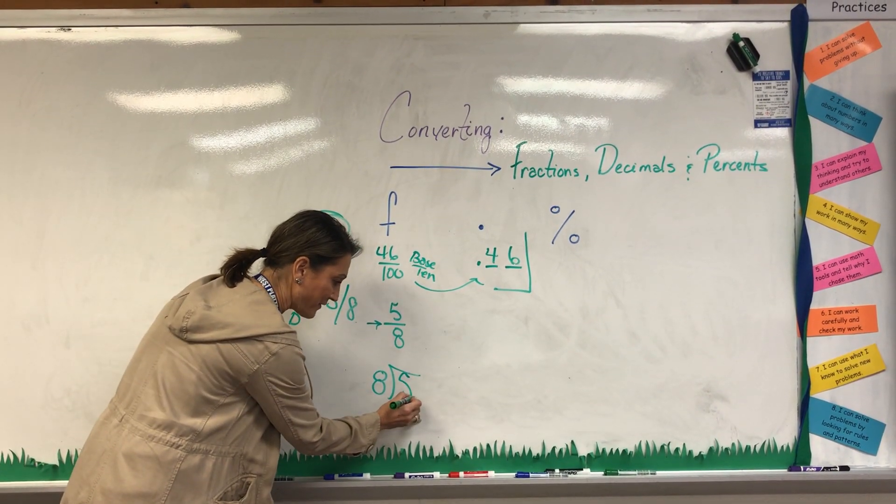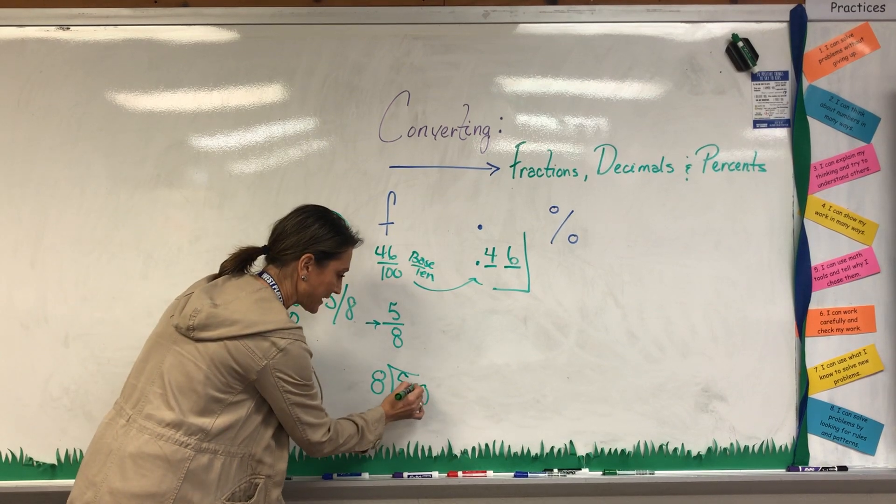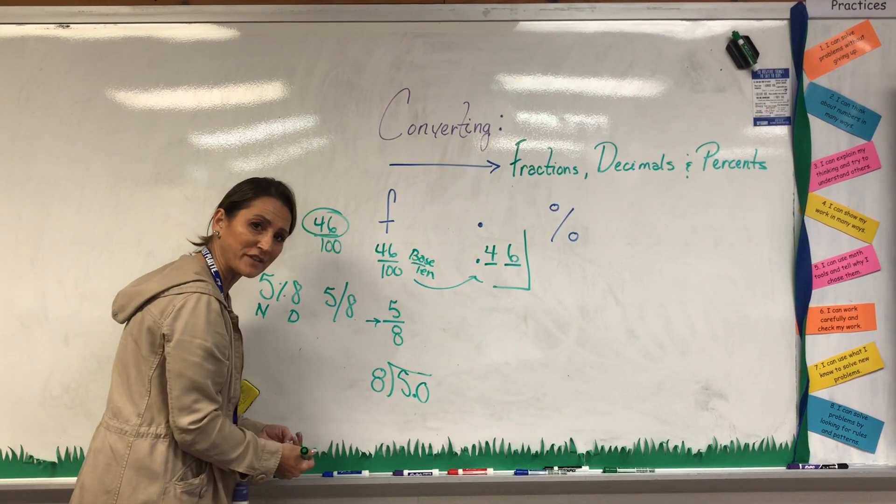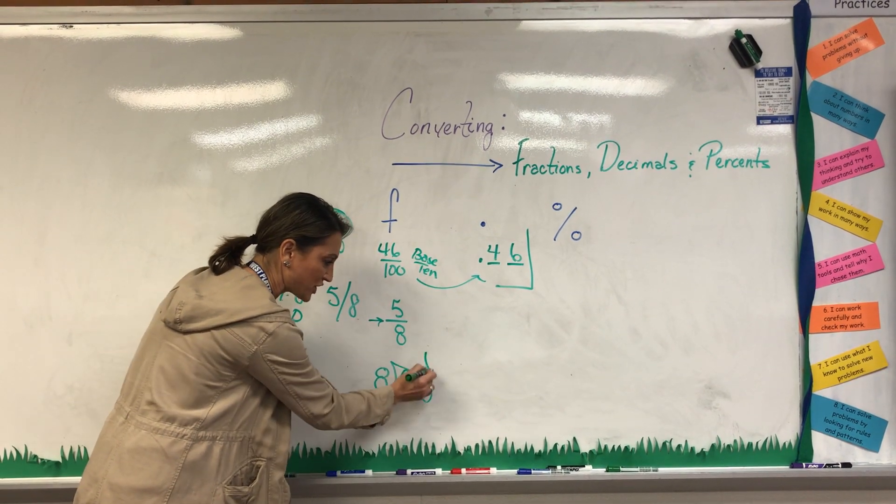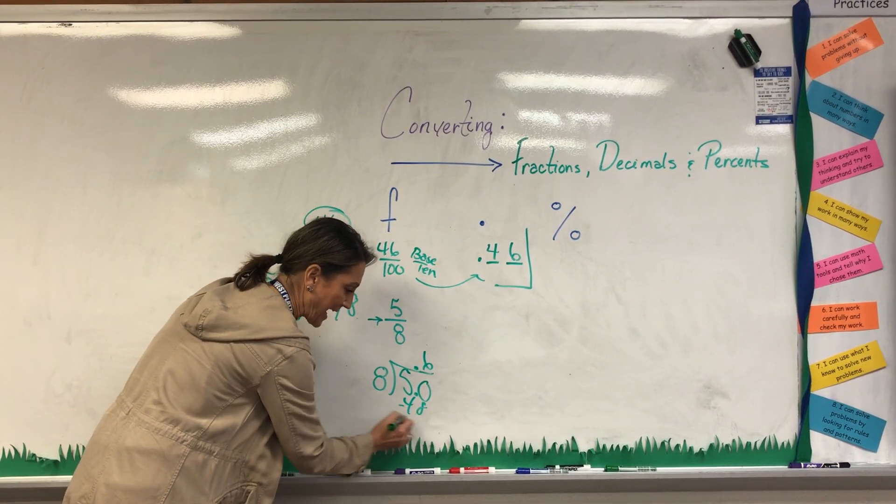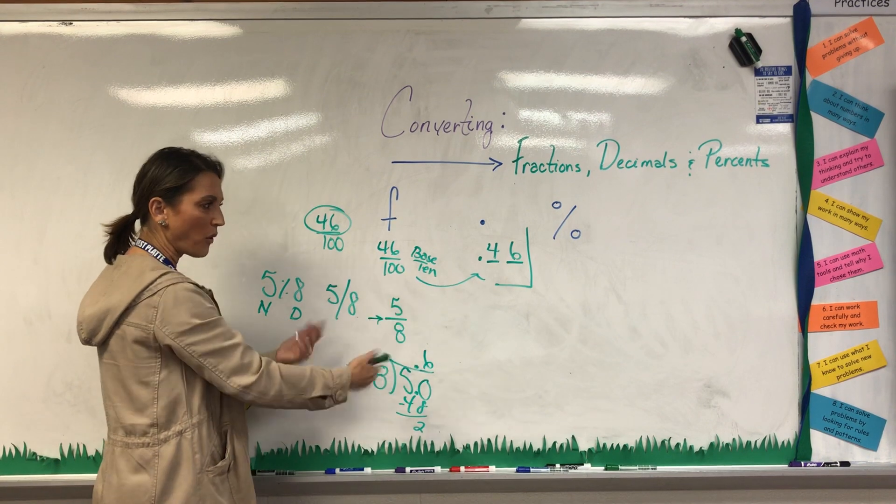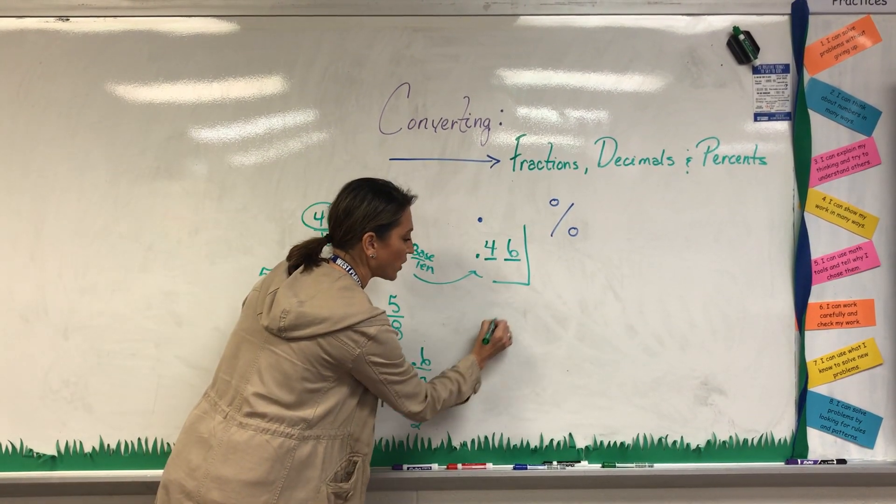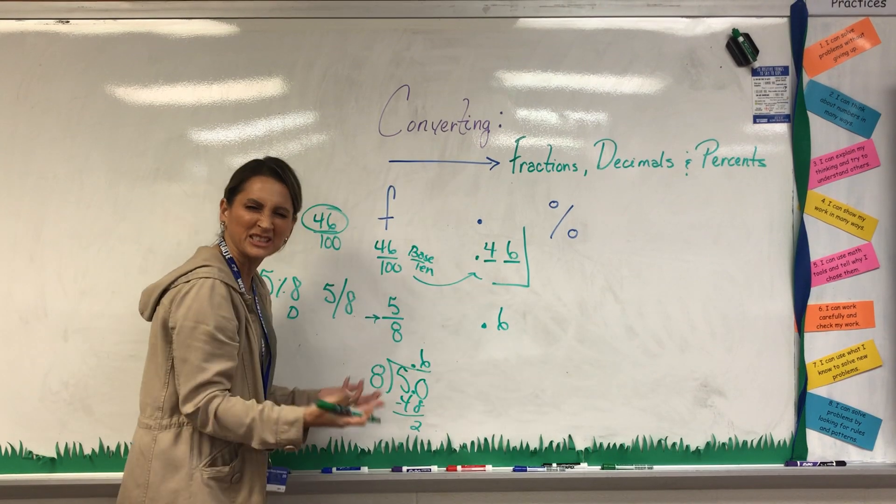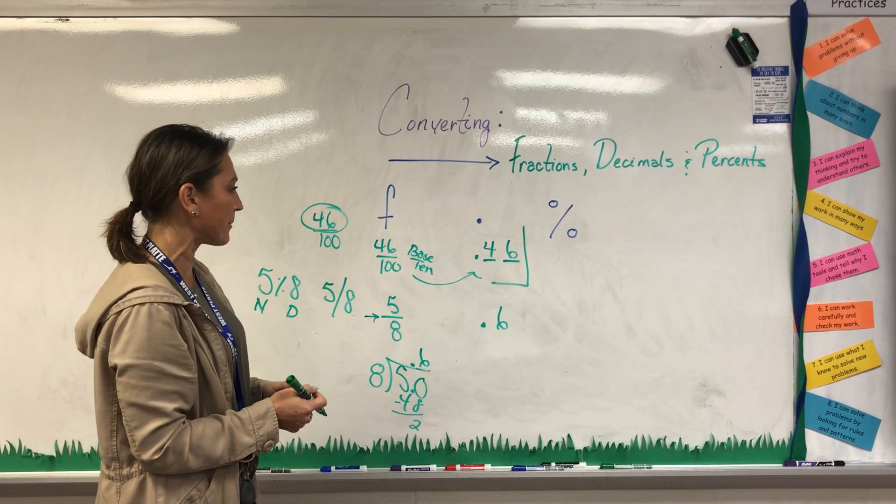I can't take 8 into 5, so I add a decimal and a zero and then I start my division process. 8 into 50, bringing that decimal up, 6, 48, leaves me 2, so on and so on. So that I know now that 5 eighths is a decimal at 0.6 something something if I wanted to work it all the way out.